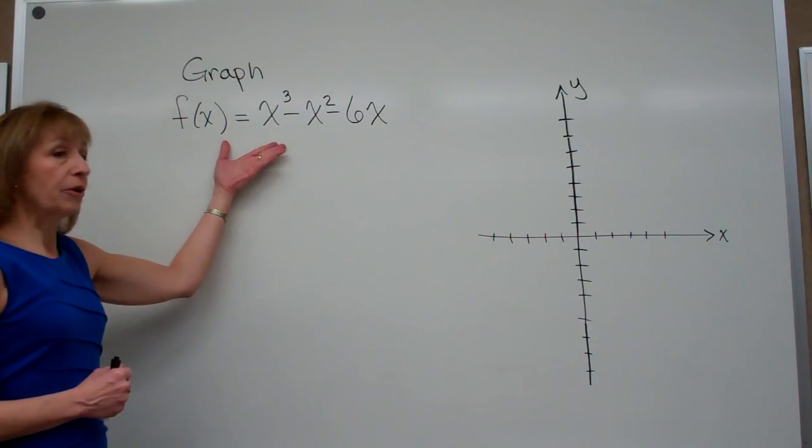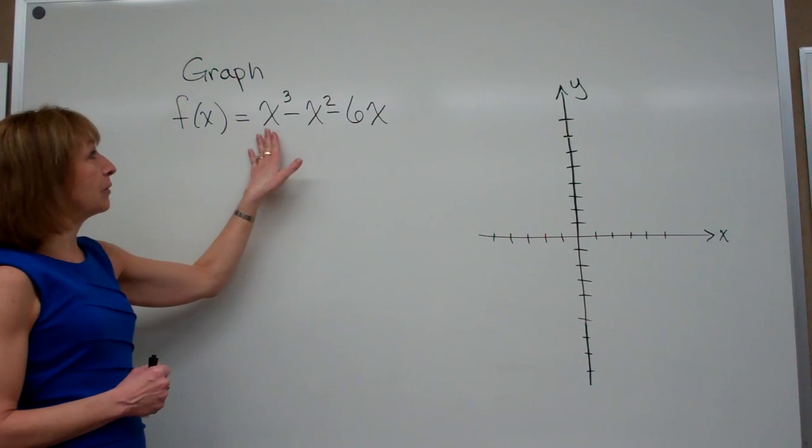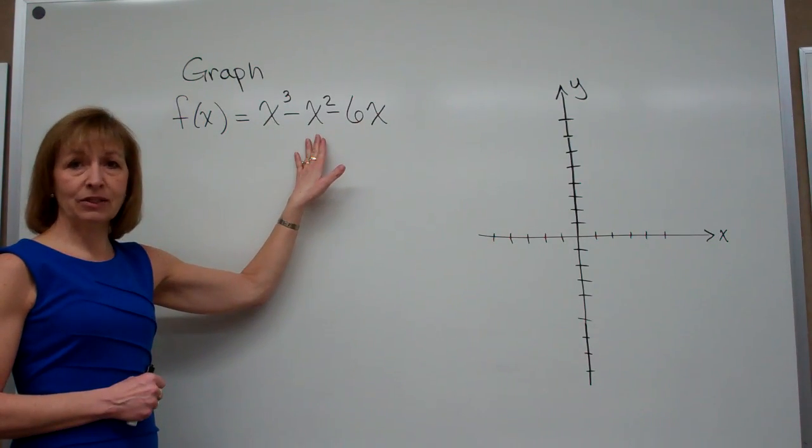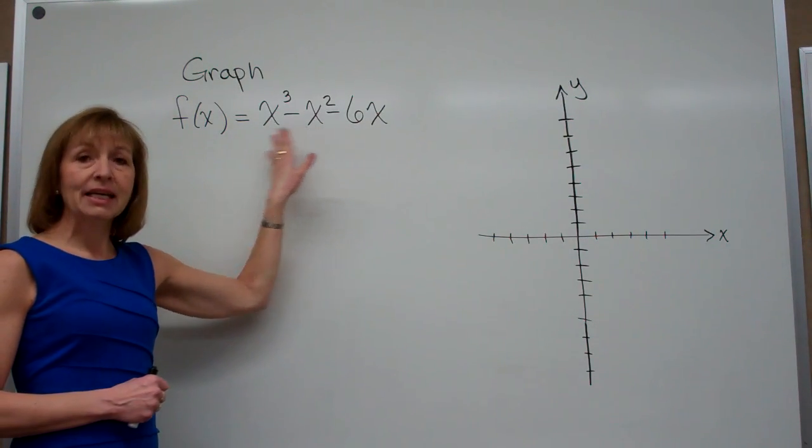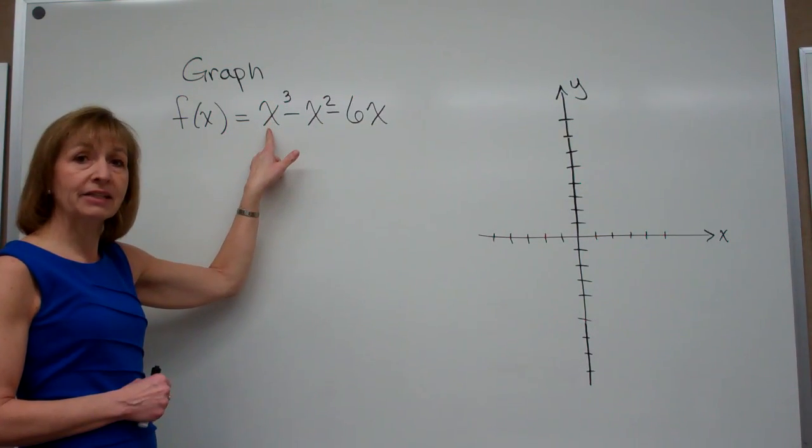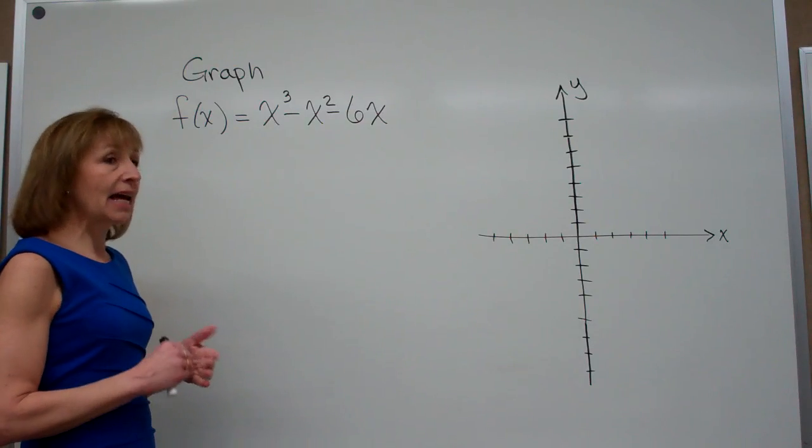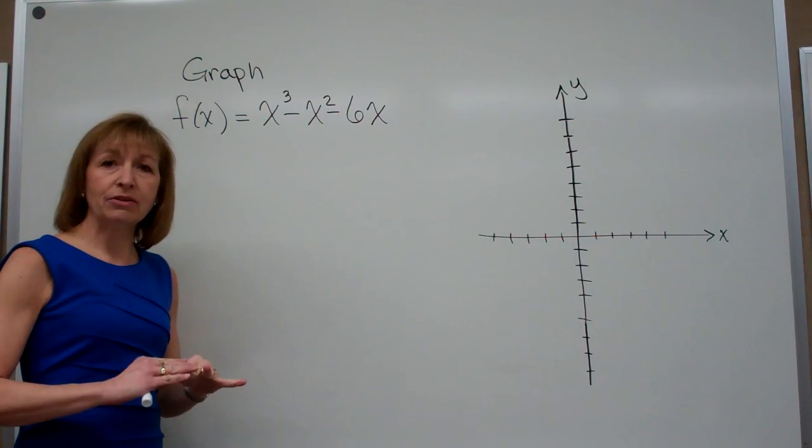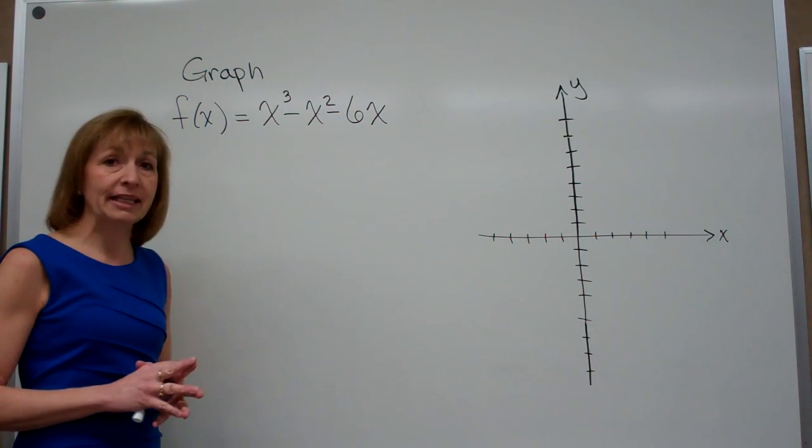Now this example that I'm going to do in this segment is f(x) = x³ - x² - 6x. It's a polynomial equation because it has whole number exponents on its variables, and I don't have any fraction bars with letters in the denominator or anything like that.